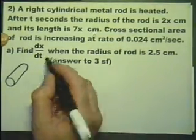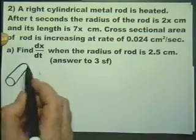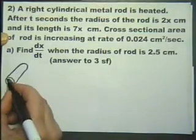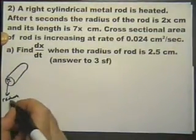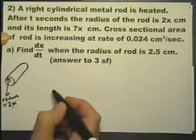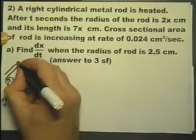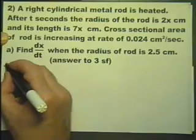After t-seconds, the radius of the rod is 2x centimeters. So the radius, I'll write the word radius there just to make sure we don't forget that's the radius. It's 2x and the length is 7x. Both dimensions are in centimeters.